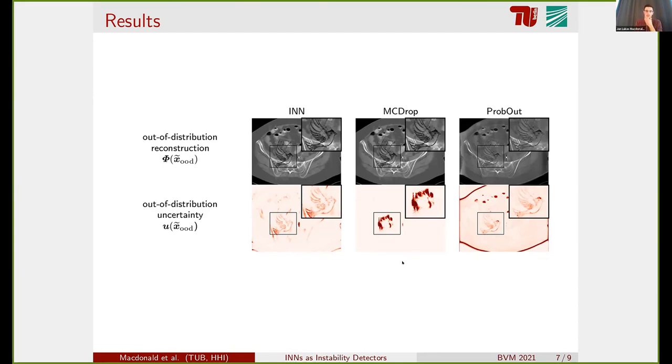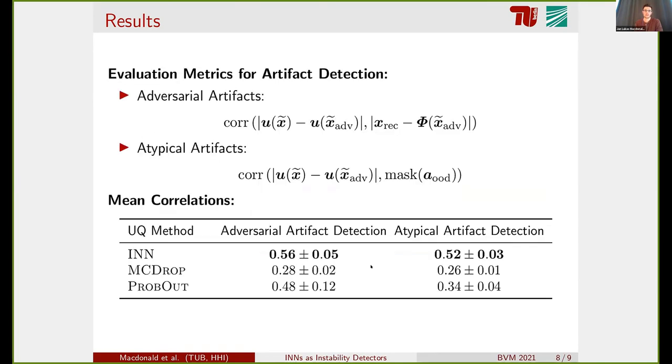We didn't only look at these images. We also did a more quantitative analysis over several images from the test set. We computed correlations between the predicted uncertainty and the region in the image where we expected the uncertainty to be. This is the change in the reconstruction in the case of adversarial perturbations, and this is exactly the mask of the added bird in the second experiment. We see in both experiments that all three methods are in fact positively correlated with the correct region, so they detect the instability, and the interval neural network performs best in both cases.